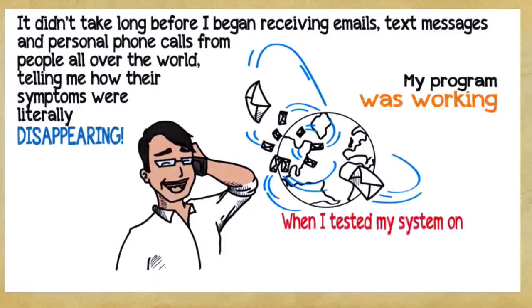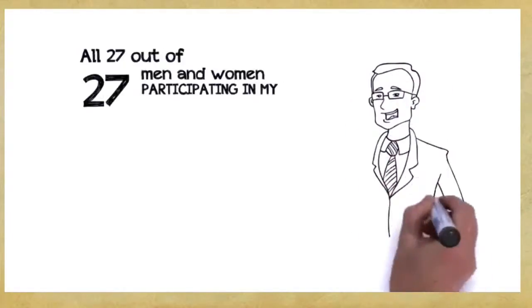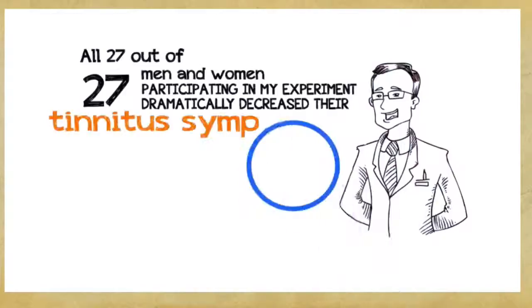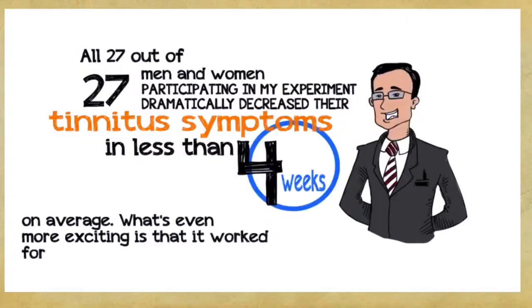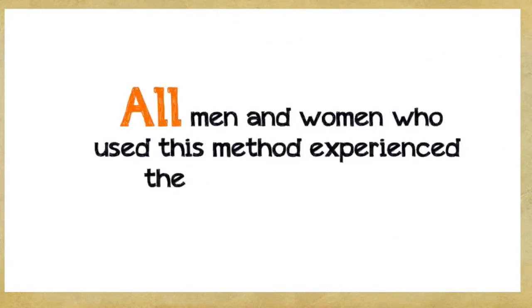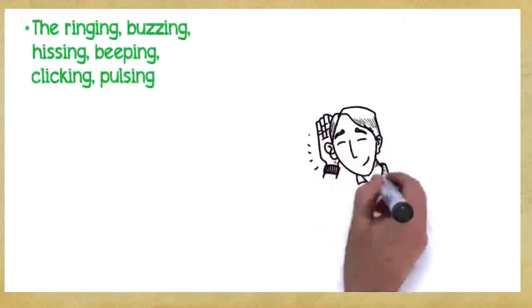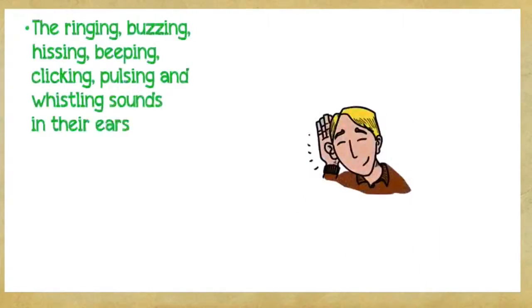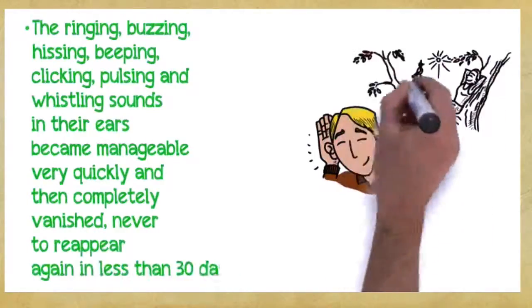It didn't take long before I began receiving emails, text messages, and personal phone calls from people all over the world telling me how their symptoms were literally disappearing. My program was working and more and more people were asking me for help. When I tested my system on other tinnitus sufferers, it yielded the same shocking and groundbreaking results. All 27 out of 27 men and women participating in my experiment dramatically decreased their tinnitus symptoms in less than four weeks on average. What's even more exciting is that it worked for all types of tinnitus and levels of severity and for men and women of any age. The ringing, buzzing, hissing, beeping, clicking, pulsing, and whistling sounds in their ears became manageable very quickly and then completely vanished, never to reappear again in less than 30 days.